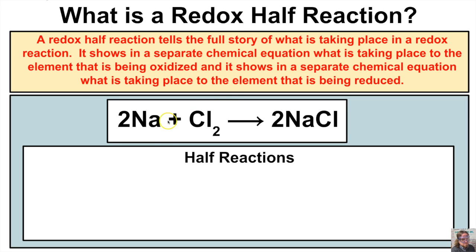Let's suppose we have a chemical reaction where sodium reacts with chlorine gas to produce sodium chloride. In an earlier video we learned how to determine whether elements are being oxidized or reduced. Sodium is elemental here, so its oxidation state is zero. Cl₂ is also elemental, so its oxidation state is zero. On the product side, sodium in a compound has a +1 oxidation state, and chlorine has a -1 oxidation state.